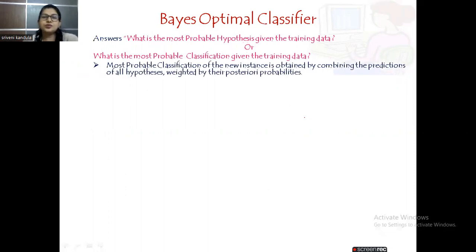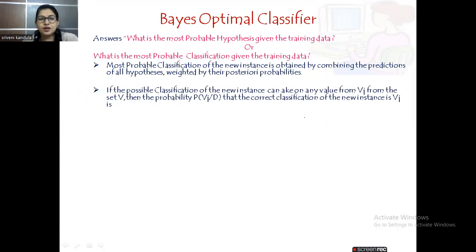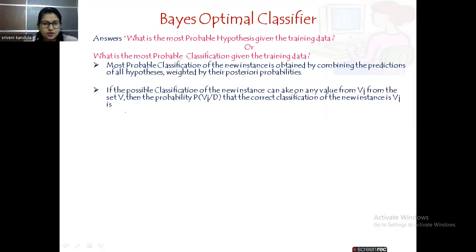The most probable classification of the new instance is obtained by combining the predictions of all hypotheses given in the training data, multiplied by their posterior probabilities. If the possible classification can take any value Vj from the target set V, then the probability P(Vj|D) that the correct classification is Vj is given by the formula: P(Vj|D) = sigma over Hi in the hypothesis set of P(Vj|Hi) multiplied with P(Hi|D).